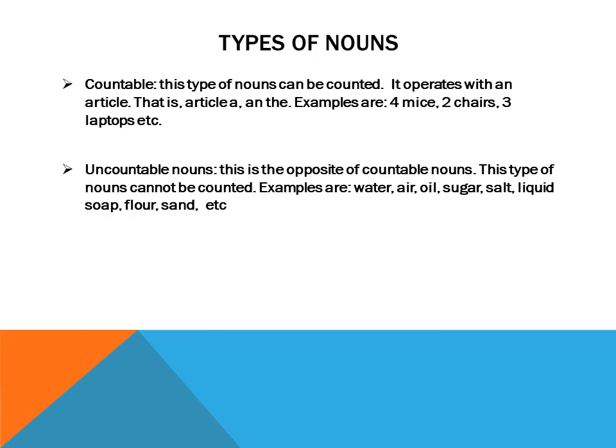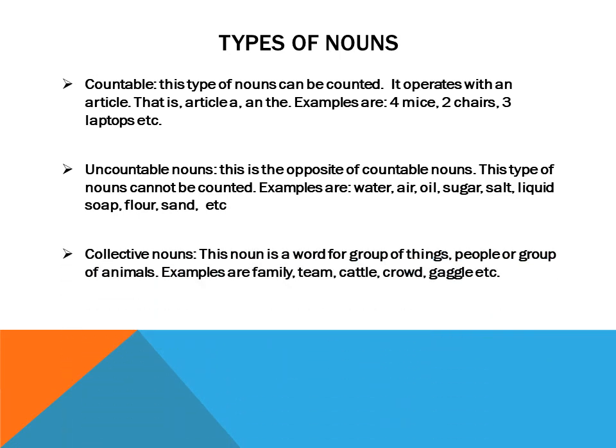Then we have uncountable nouns, the exact opposite of countable nouns. This type of noun cannot be counted. Examples include water — you can't count water — oil, and so on.